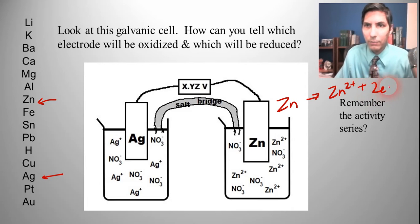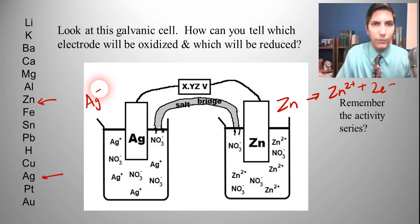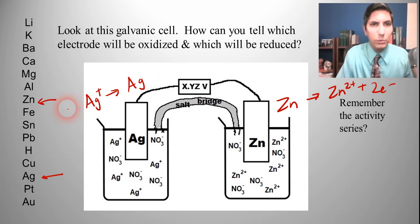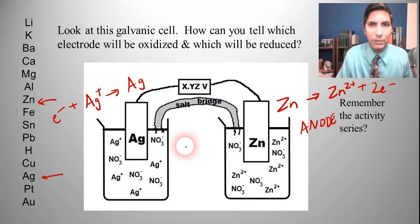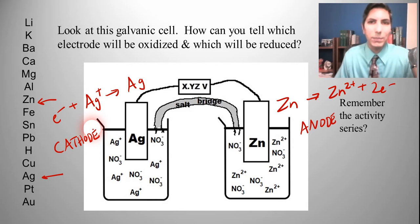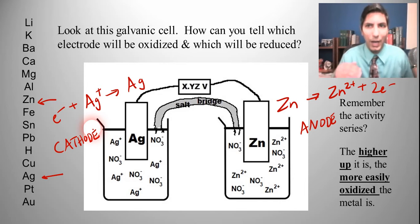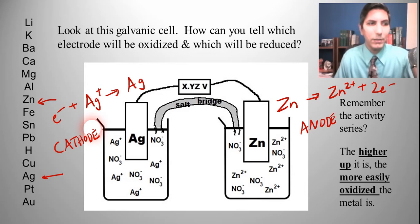We balance that by adding a couple of electrons. Then these silver ions are going to be reduced — the silver ions are reduced down into plain silver metal, and we need an electron to do that. Since oxidation is taking place on the zinc side, that means this is the anode, because oxidation always takes place at the anode. And that means the other side is the cathode. The higher up on the activity series, the more easily oxidized the metal is going to be.